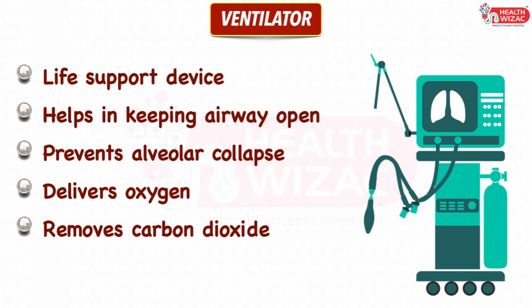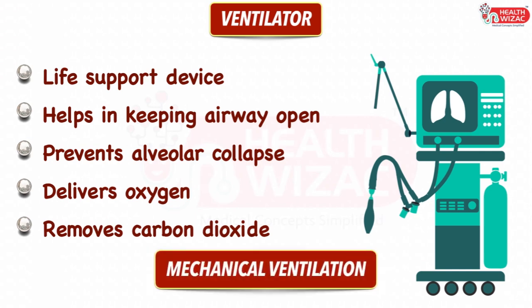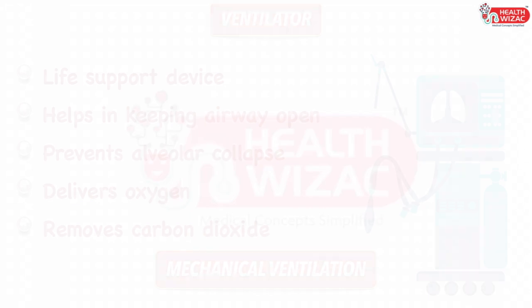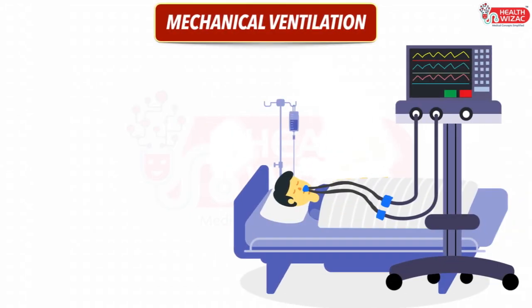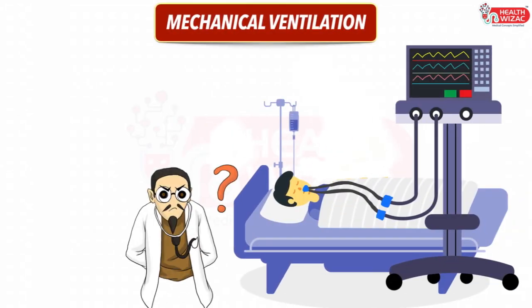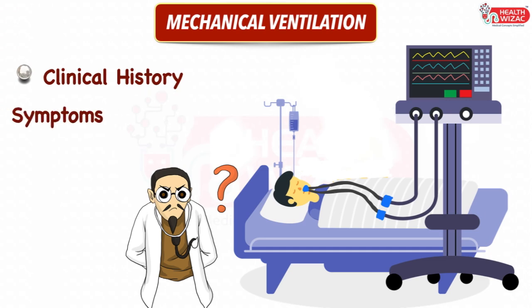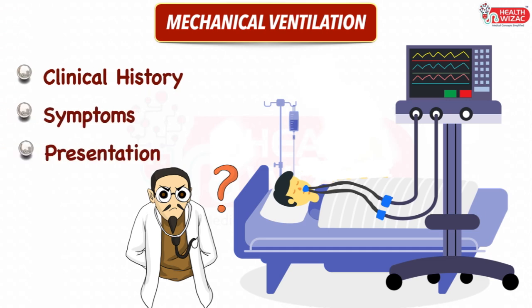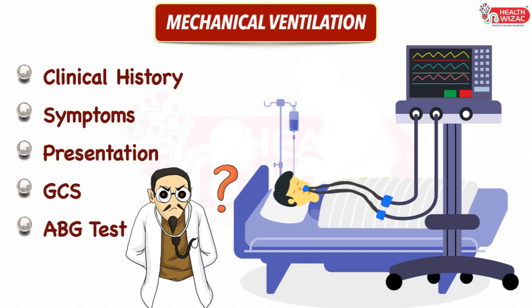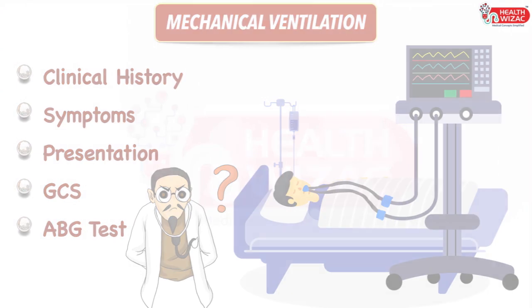The process or treatment approach is termed as mechanical ventilation. The decision of mechanical ventilation is critical and is taken through various factors including the patient's clinical history, symptoms and presentation, GCS, and ABG test. This step helps in deciding the type of mechanical ventilation the patient needs.